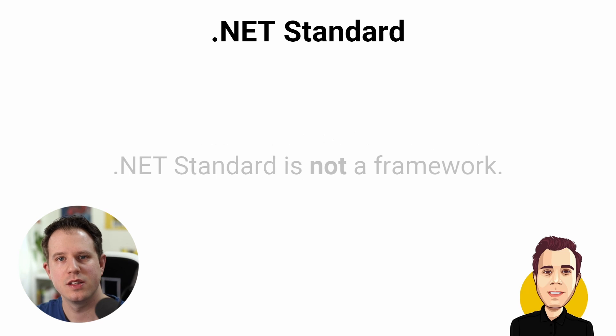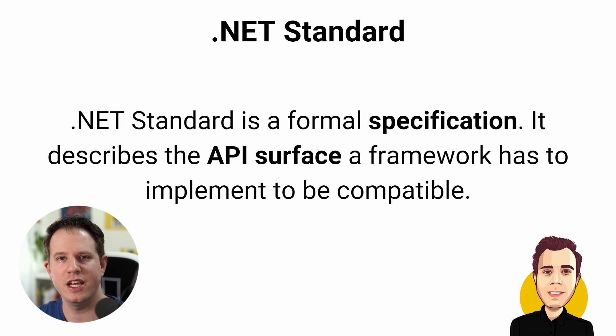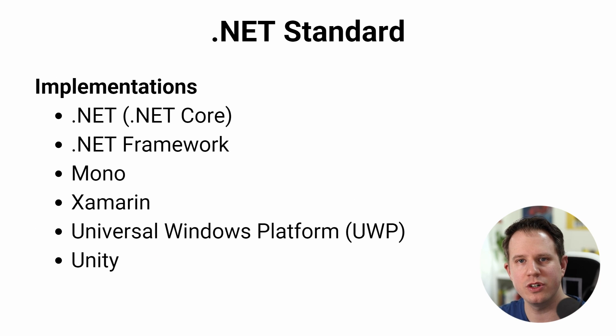So we finally have a clear picture of the .NET Framework, all its versions, and how .NET Core came into play. But what about the .NET Standard? How does it fit into this big picture? Let's clear up one of the biggest misconceptions first. Somehow the idea of .NET Standard being a next-generation framework has spread around the web — that's completely wrong. The .NET Standard is a formal specification that different platforms, such as the .NET Framework or .NET Core, implement. It describes the API surface the frameworks must implement to be compatible. The idea behind .NET Standard was to allow code sharing between different projects targeting different frameworks such as .NET Framework, .NET Core, Mono, Xamarin, or Universal Windows Applications.